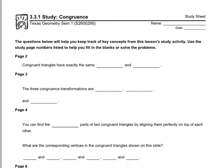We started talking about congruence. When two things are congruent, especially two shapes, that means they have exactly the same size and exactly the same shape. If two things are congruent, they have the same size and the same shape.